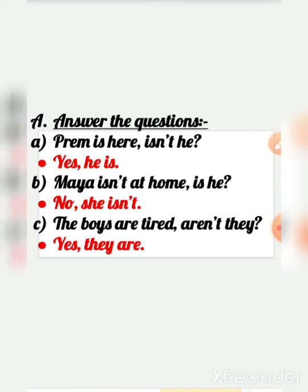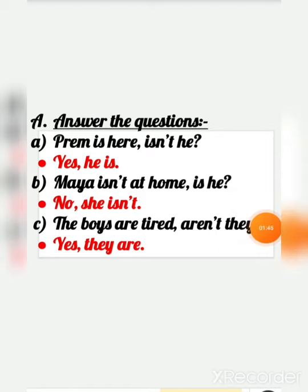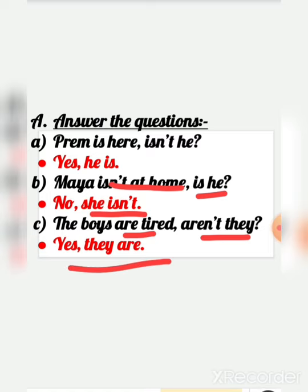Now let's do the questions here. Answer the questions. A: 'Prem is here. Isn't he?' — Yes, he is. B: 'Maya isn't at home. Is she?' — No, she isn't. C: 'The boys are tired. Aren't they?' — Yes, they are. You can see that in every simple sentence, at the end we have added a question. So it became a question, right?